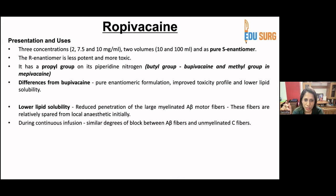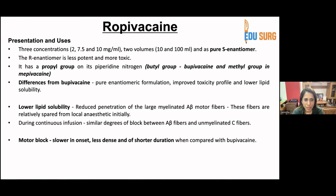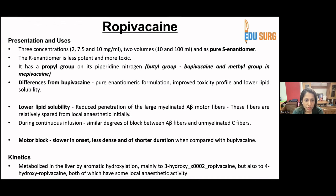During continuous infusions, there are smaller degrees of block between A-beta and unmyelinated C fibers. Motor block is slower in onset, less dense, and of shorter duration when compared with bupivacaine. Regarding kinetics, ropivacaine is metabolized in the liver by aromatic hydroxylation mainly to 3-hydroxy ropivacaine but also to 4-hydroxy ropivacaine, and both metabolites have the same local anesthetic activity.